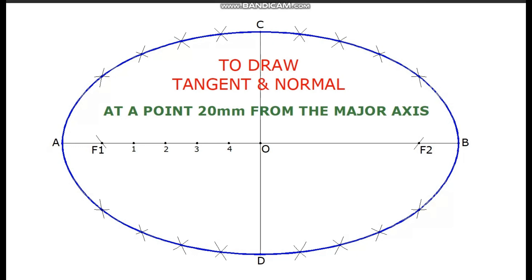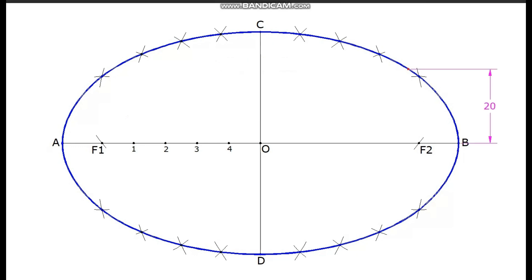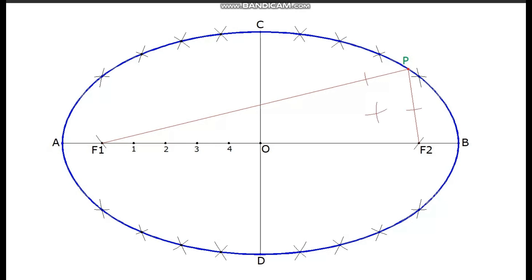To draw the tangent and normal, mark a point P 20 mm from the major axis. Join F1P and F2P. Draw a bisector for the angle F1PF2 — this is the normal. A line perpendicular to the normal drawn through P is the tangent.